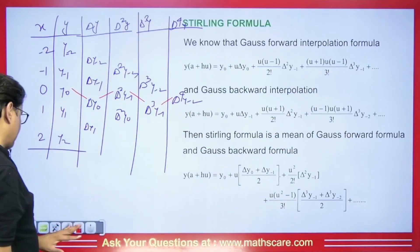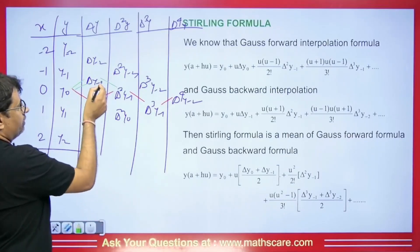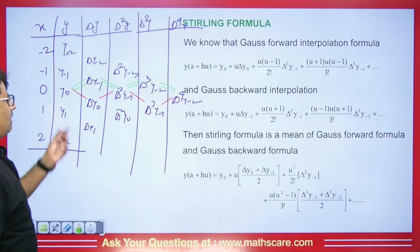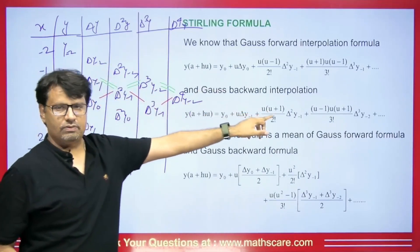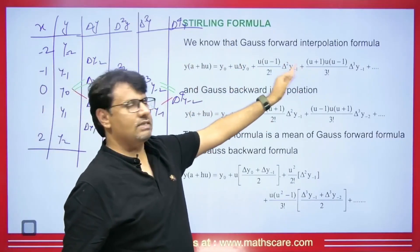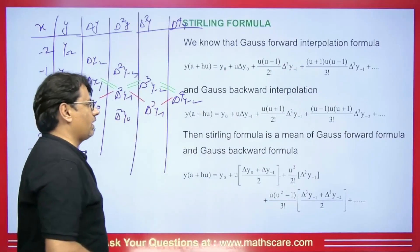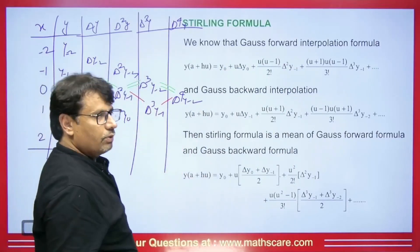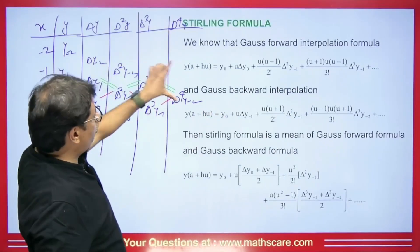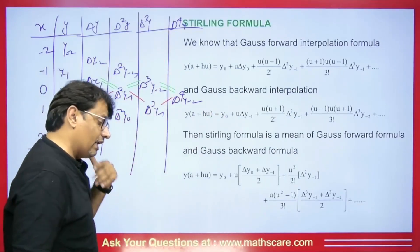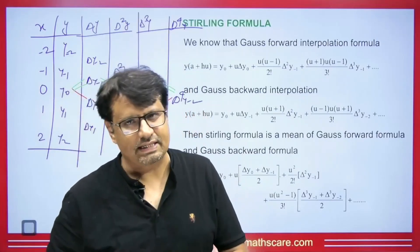If we talk about Gauss backward, what happens is: y₀ + u·Δy₋₁ + [u(u+1)/2!]·Δ²y₋₁ + [(u−1)u(u+1)/3!]·Δ³y₋₂, and so on. When we talk about forward, minus comes, and when we talk about backward, plus comes. From the calculation, whatever answer comes for these two — as I have shown in videos before — the answer is almost the same, with a small difference after the third or fourth decimal place.